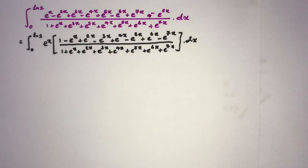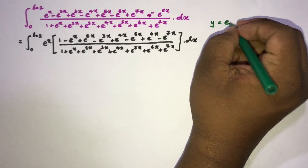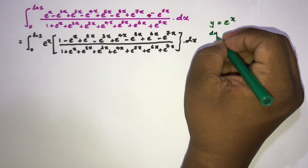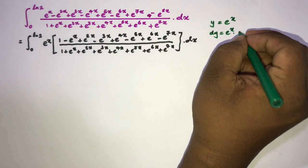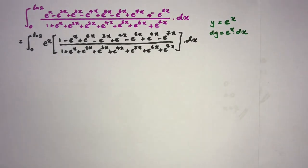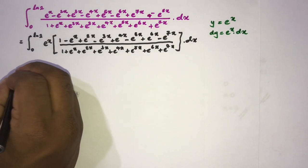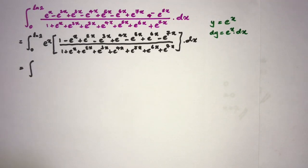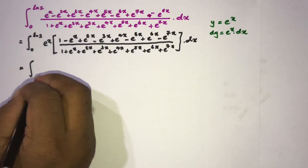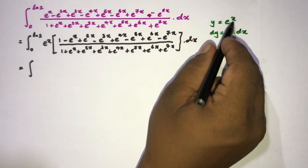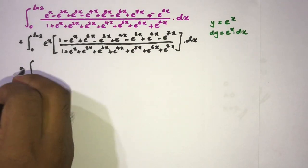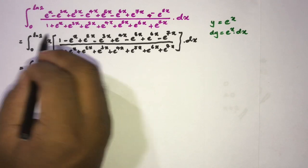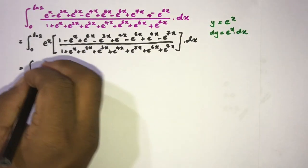We can simplify this using a substitution. Let y equal e to the x, then dy equals e to the x dx. Now we change the limits: when x approaches 0, y approaches 1; when x approaches natural log of 2, y approaches 2.